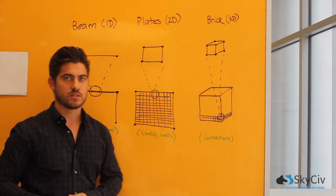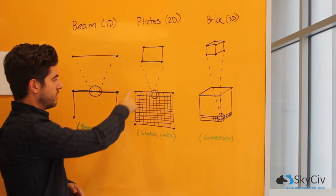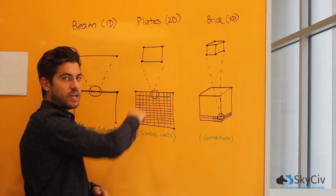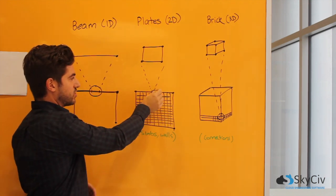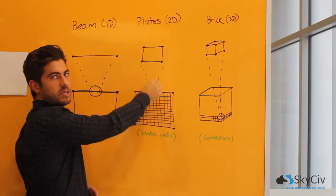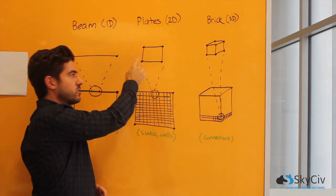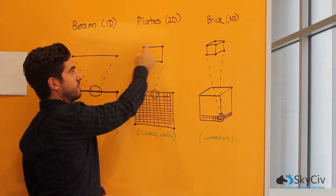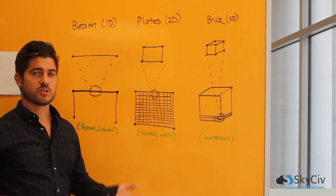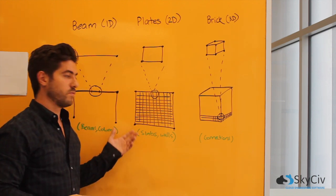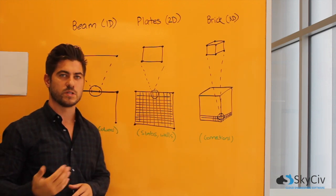Secondly, we have plates, which are 2D elements. Now they're 2D because obviously that's a 2D plane. And what we're doing again is the same principle of extracting a smaller component, which is a 2D element, and looking at those internal member forces, internal plate forces at each of these node locations. And typically a structural engineer will use these types of elements for slabs or retaining walls.